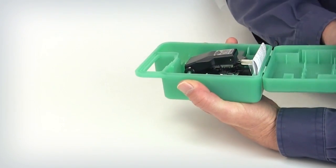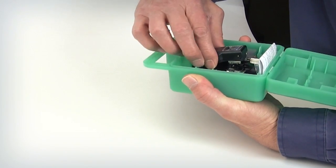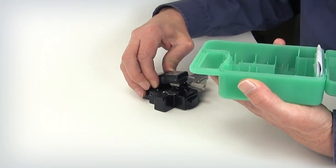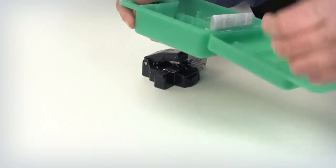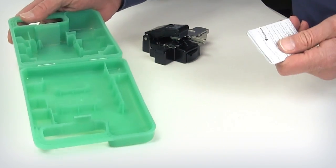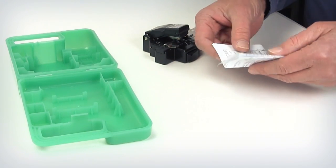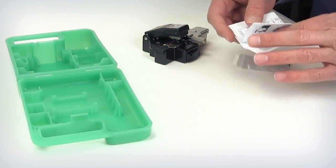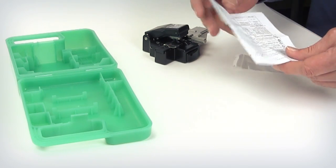Pull out and up on the latch to open the transit case and remove the CT-06 cleaver. A 1.5 mm hex wrench and operating instructions are provided for cleaver maintenance.